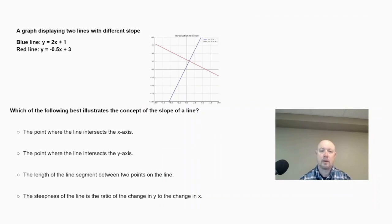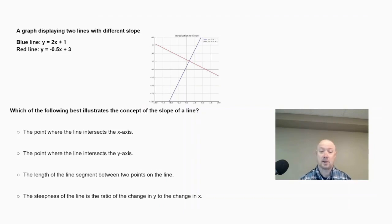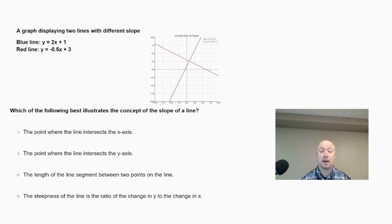Which of the following best illustrates the concept of the slope of a line? Is it the point where the line intersects the x-axis, the point where the line intersects the y-axis, the length of the line segment between two points on the line, or the steepness of the line as the ratio of the change in y to the change in x?